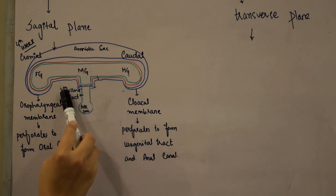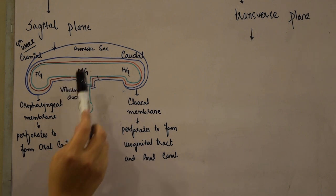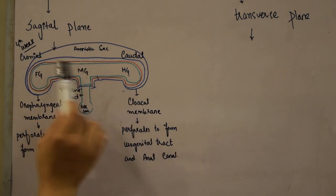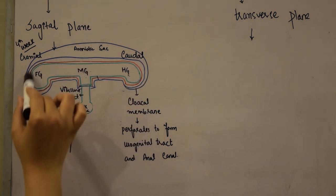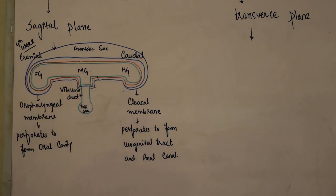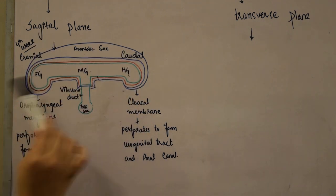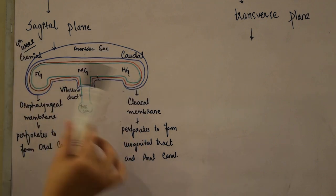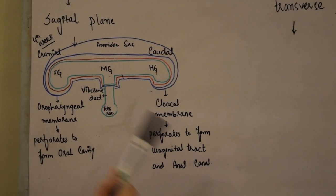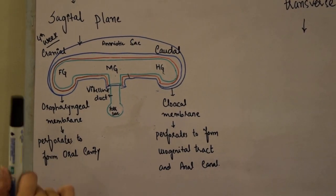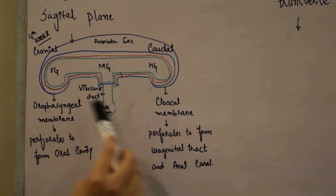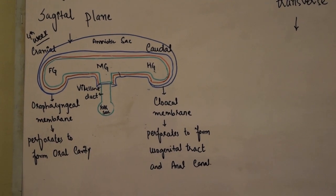The midgut is connected to the yolk sac via the vitelline duct, which is obliterated at the sixth week. Around the endoderm is the mesoderm, and outward is the ectoderm, which is responsible for formation of the skin, the CNS including brain and spinal cord, and neural crest cells that form ganglion cells of the myenteric and submucosal plexuses of the GI tract. Above will be the amniotic sac and below will be the yolk sac.